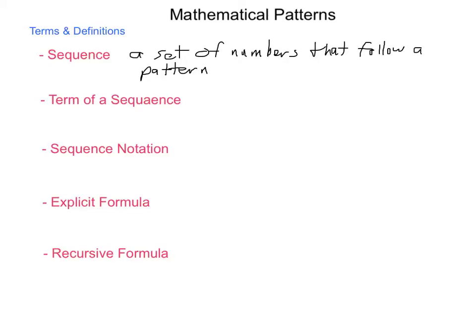A term of a sequence is a single element in that set. And when we start talking about the terms of a sequence, we'll say the 5th term, the 6th term, the 12th term. If we're looking for a general term, we will say the nth term, n meaning some number.